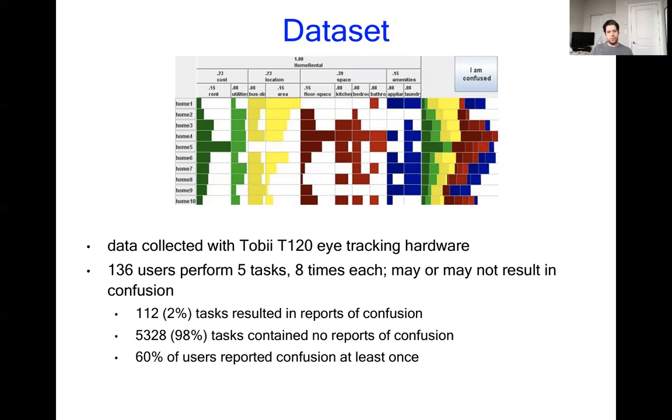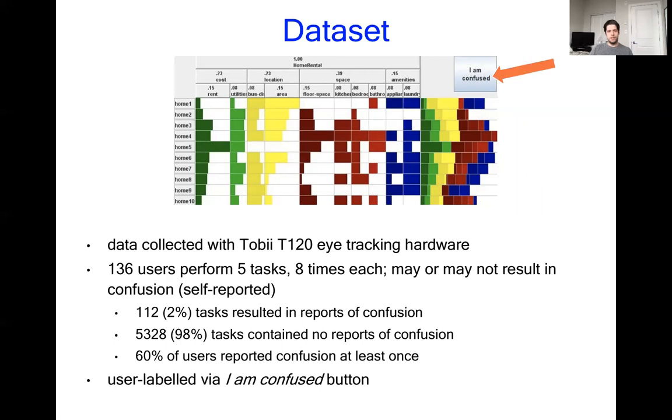In the end, there were 112 tasks that had reports of confusion, and there were 5,000 that didn't. However, 60% of the users reported confusion at least once, which tells us this is still a state worth addressing. The labels for this dataset were collected by self-report. That is, the user clicked a button, like the one we see in the top right-hand corner labeled I am confused, which was then confirmed to be a true instance of confusion with the study administrators later on.